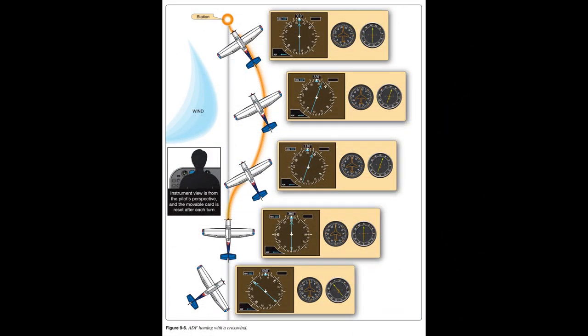Homing. The ADF may be used to home in on a station. Homing is flying the aircraft on any heading required to keep the needle pointing directly to the 0-degree RB position. To home in on a station, tune the station, identify the Morse code signal, and then turn the aircraft to bring the ADF azimuth needle to the 0-degree RB position. Turns should be made using the heading indicator. When the turn is complete, check the ADF needle and make small corrections as necessary. Homing starts from an initial MH of 050 degrees and an RB of 310 degrees, indicating a 50-degree left turn is needed to produce an RB of 0. If there is no wind, the aircraft homes to the station on a direct track. With a crosswind, the aircraft follows a circuitous path on the downwind side of the direct track to the station.